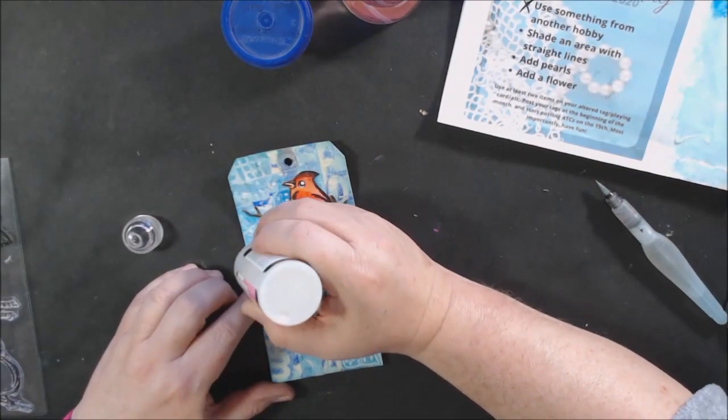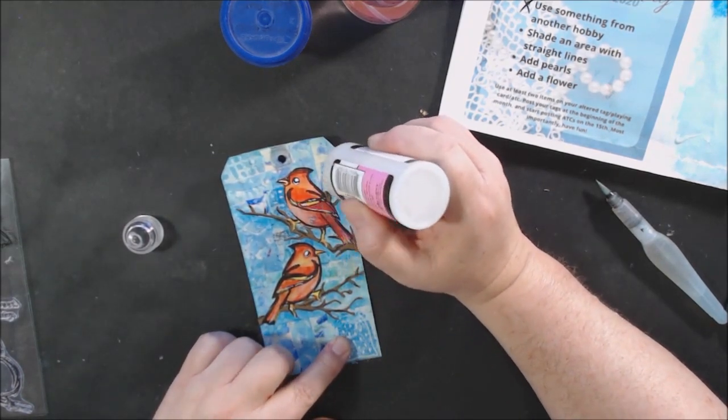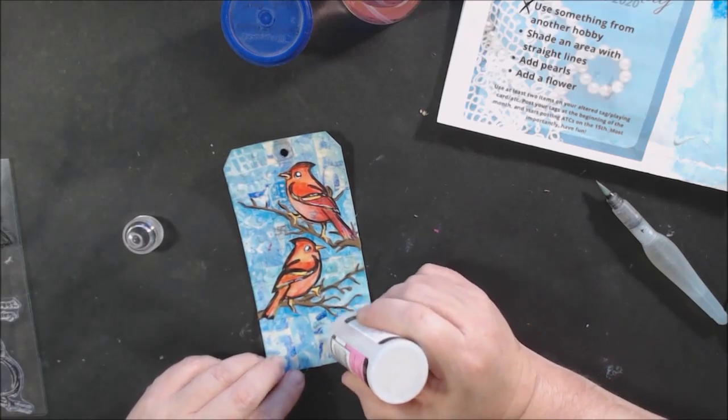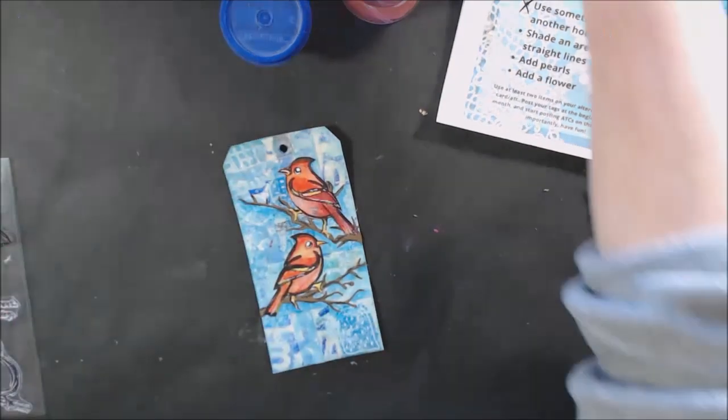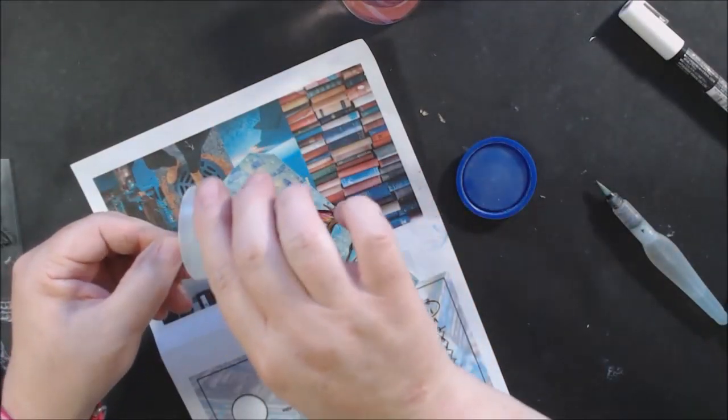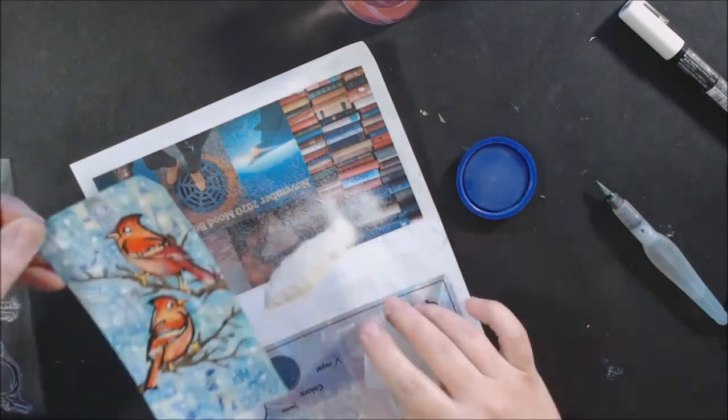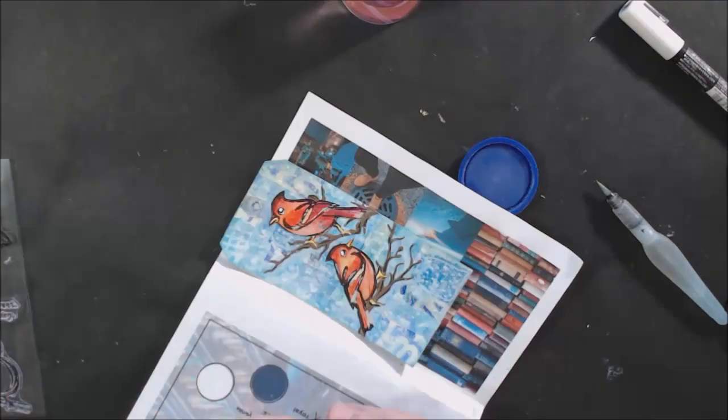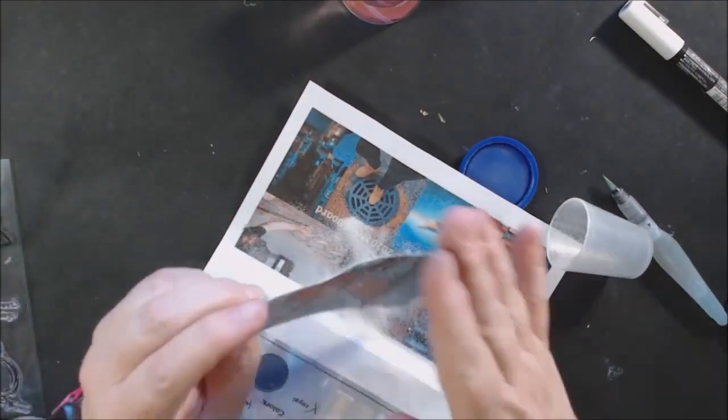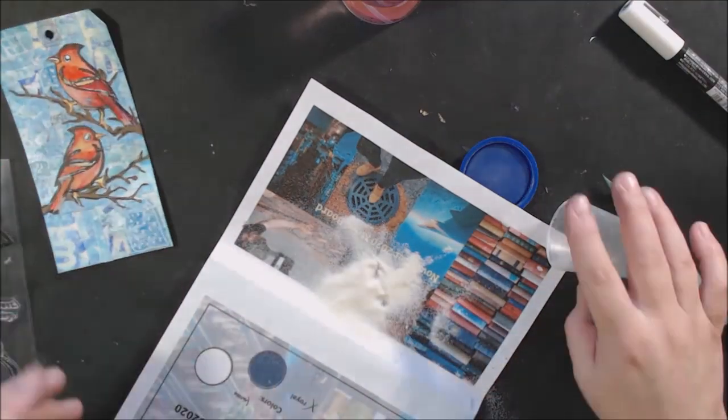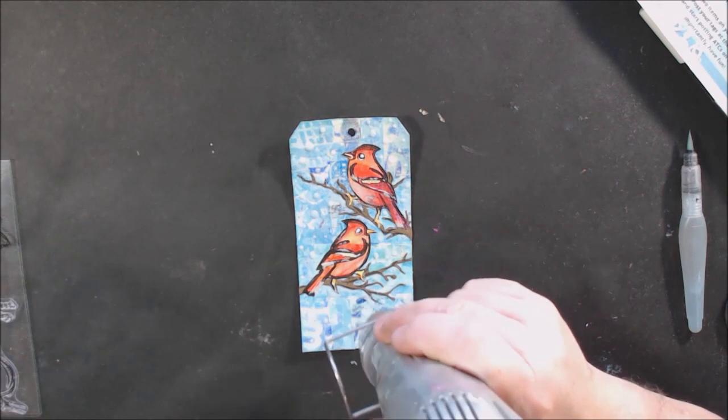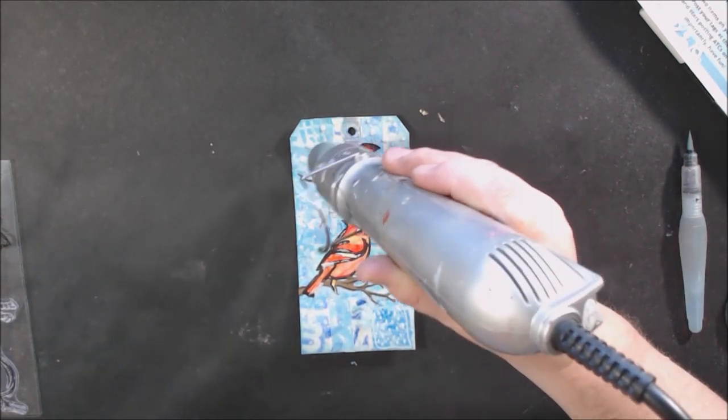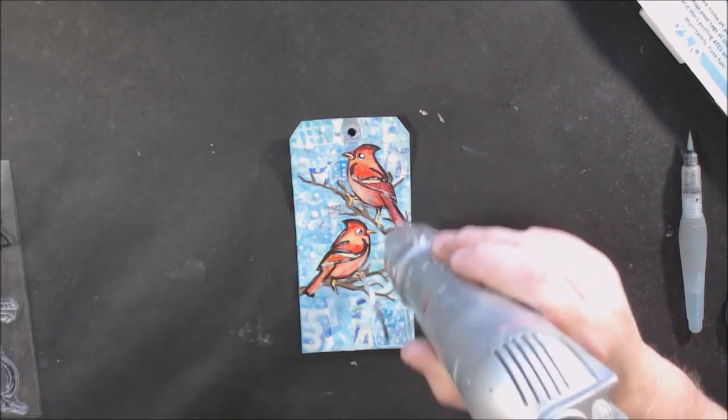So then there was another prompt that said to add pearls. I looked for my flat back pearls, I couldn't find them. I had this catastrophe where a container that I had with all the little things like stick-on pearls, sequins, all that type of stuff spilled and I just scooped it all back up and put it back in the box. But I need to go through and sort it all out. I just couldn't find them and I was annoyed, so I thought about pearl embossing powder.